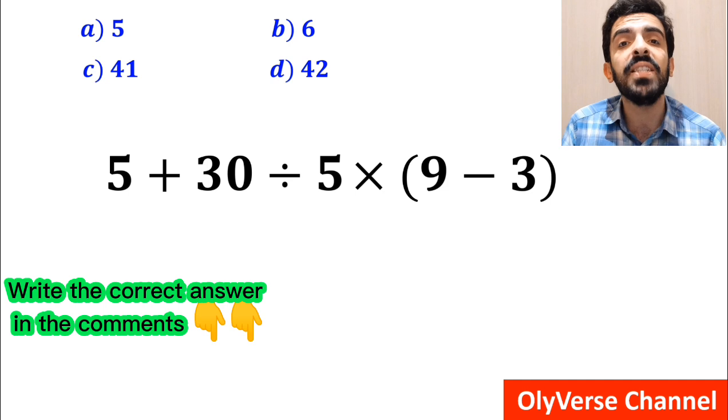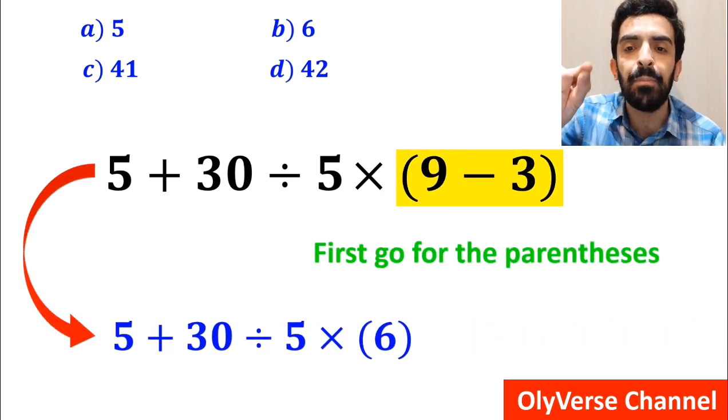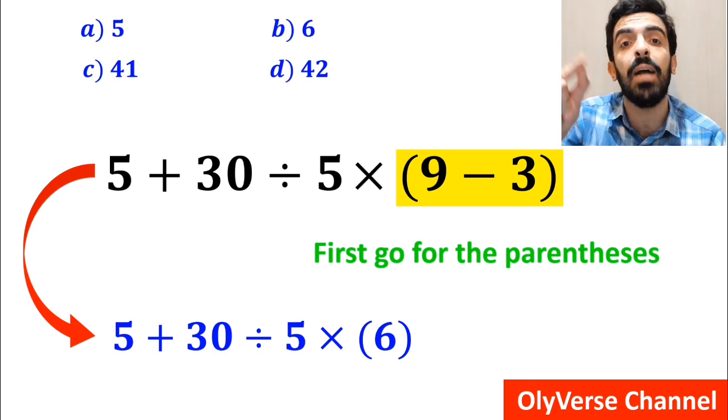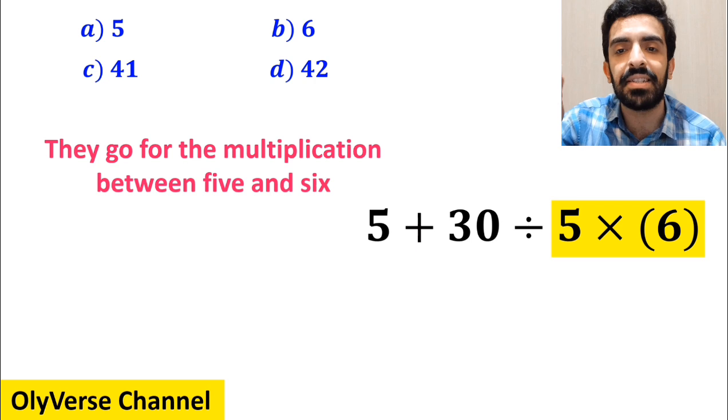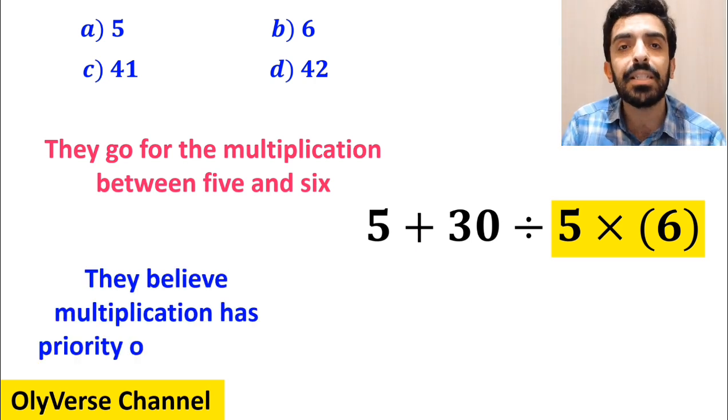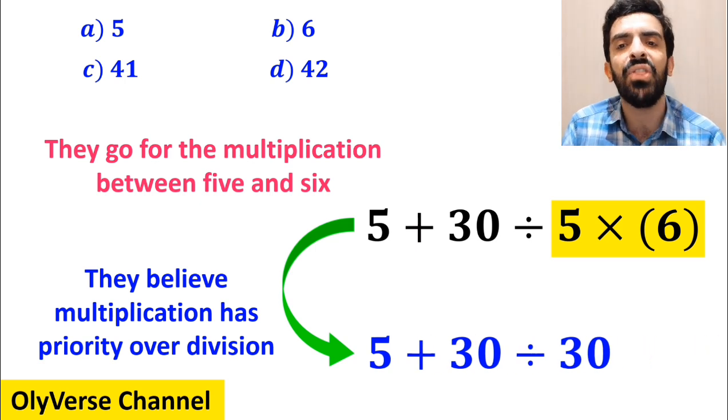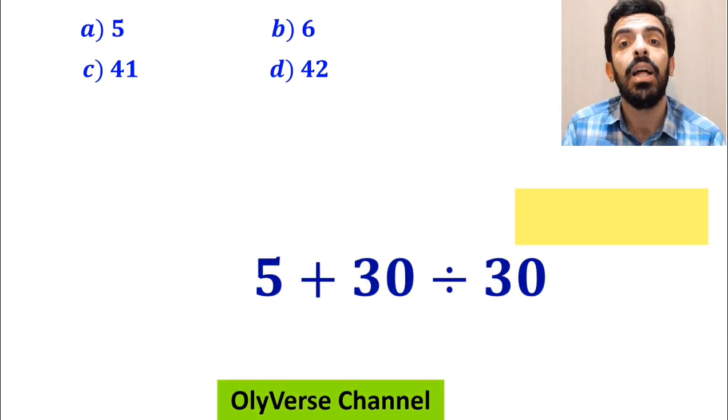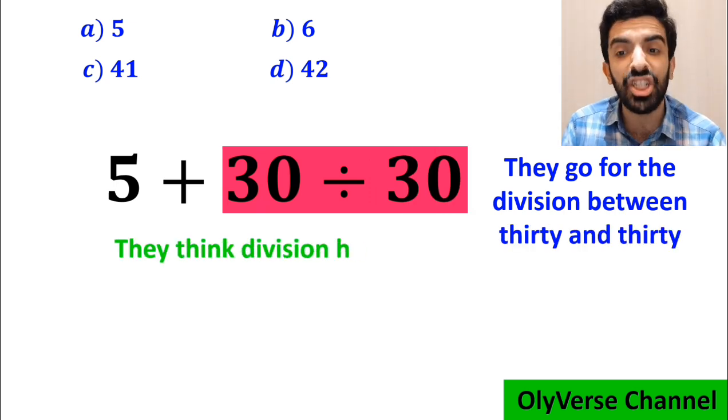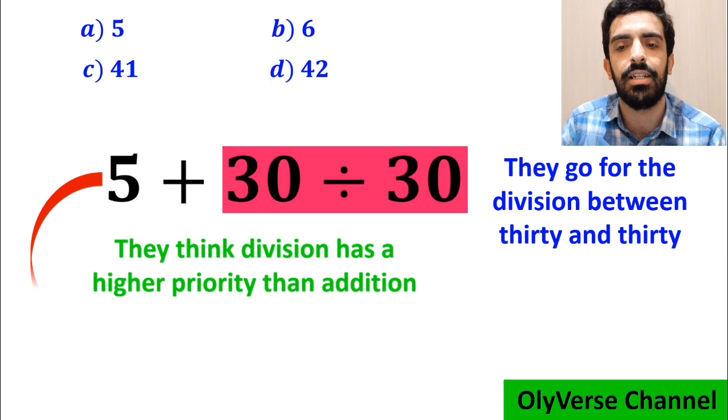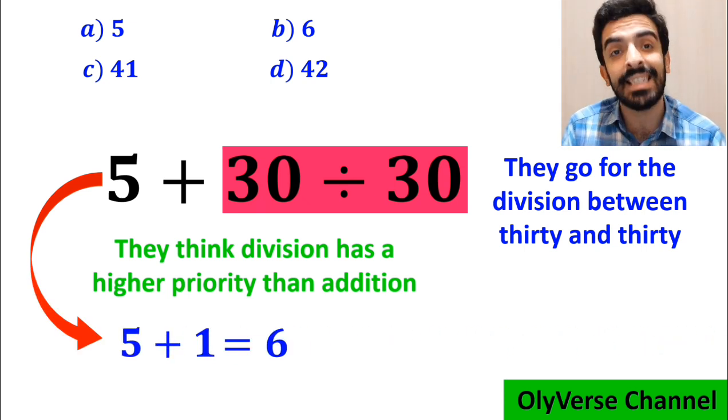Also, some other people when solving this question first go for the parenthesis and write this expression as 5 plus 30 divided by 5 times 6. And the next step they go for the multiplication between 5 and 6 because they believe multiplication has priority over division. So this expression simplifies to 5 plus 30 divided by 30. Then they go for the division between 30 and 30 because they think division has a higher priority than addition. And they rewrite this expression as 5 plus 1, which ultimately gives them the answer 6.